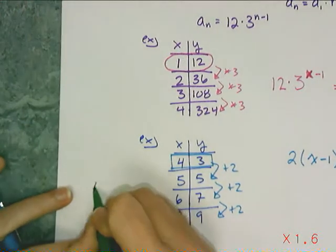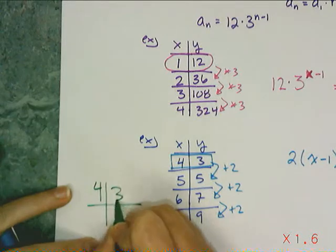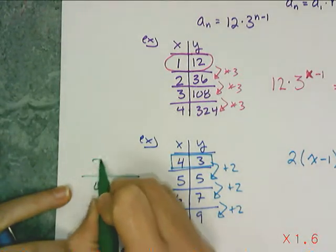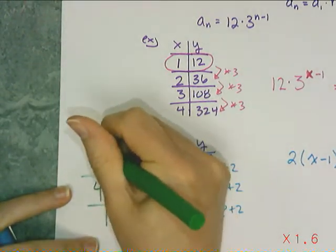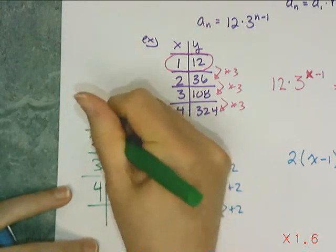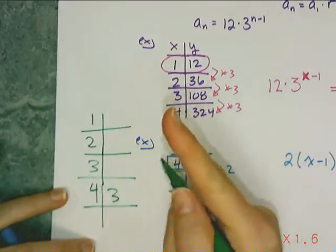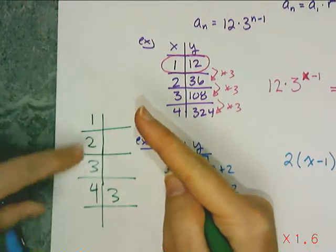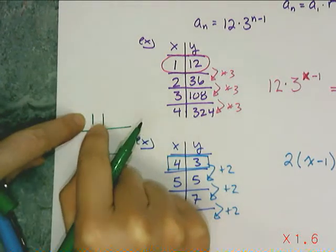And I know at 4 the value is 3. So if I go backwards, what's the value at 3, what's the value at 2, and what's the value at 1? Because I know my apparent formula for an arithmetic requires the first one, the a_1, when x is 1.